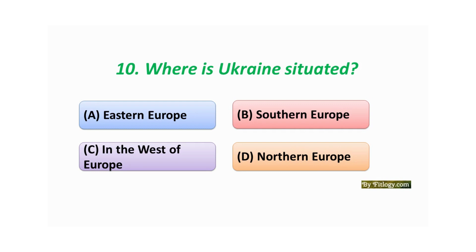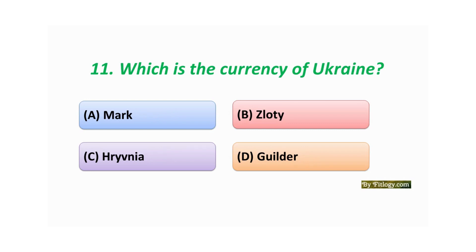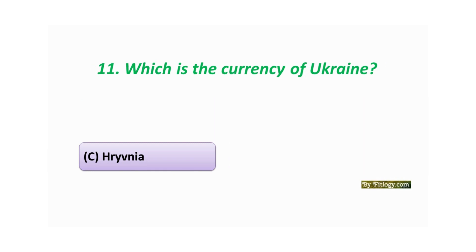Question number ten: Where is Ukraine situated? Option A: Eastern Europe. Option B: Southern Europe. Option C: Western Europe. Option D: Northern Europe. The correct answer is Option A: Eastern Europe. Question number eleven: Which is the currency of Ukraine? Option A: Mark. Option B: Zloty. Option C: Hryvnia. Option D: Guilder. The correct answer is Option C: Hryvnia.